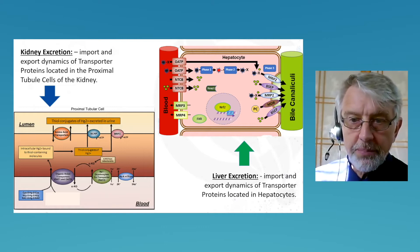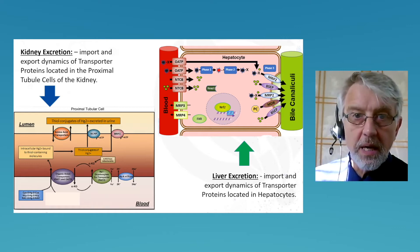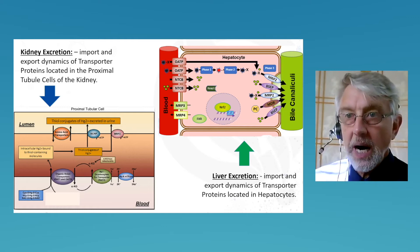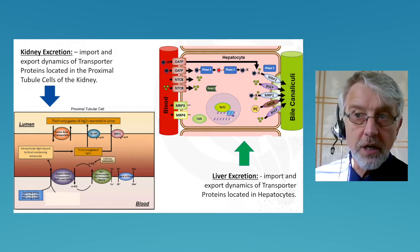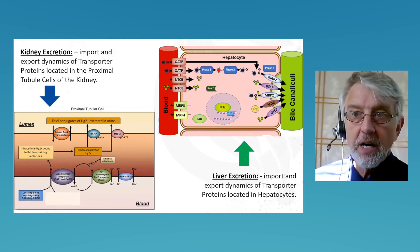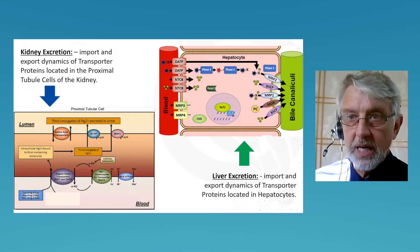MRP stands for multi-drug resistant protein. These proteins were discovered by pharmaceutical companies trying to figure out why some people resisted the action of their drugs — the MRP proteins worked really well, so the drug would go in but be excreted quickly. This is also the same mechanism through which some bacteria are able to develop resistance to antibiotics: antibiotics go in, and the bacteria excrete them.